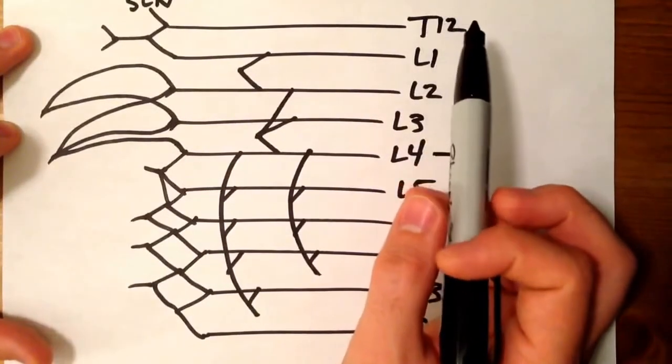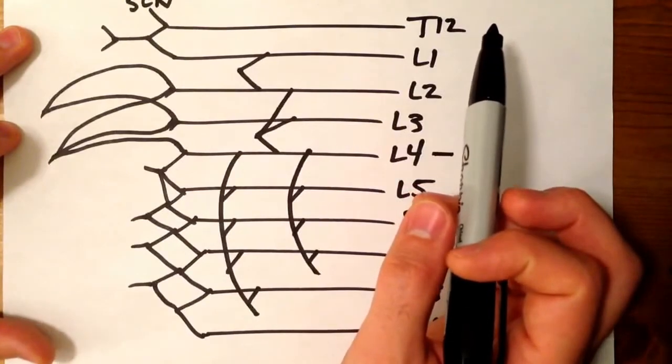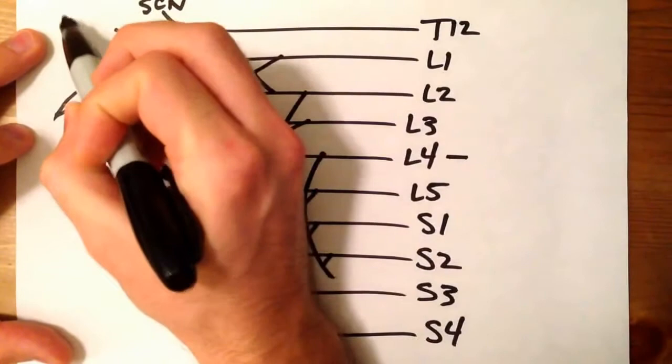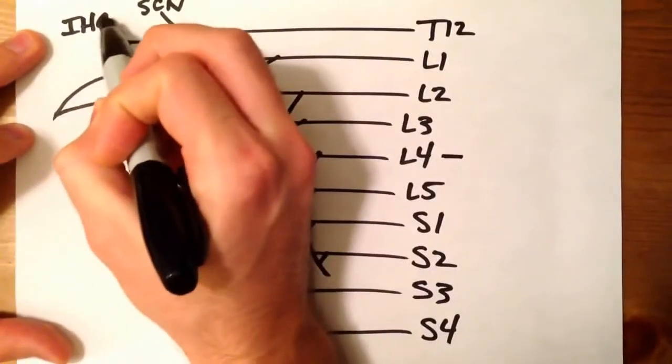These are going to be, according to Gray's 40th, they're really a variable, but according to Gray's 40th, T12 and L1 give you the iliohypogastric nerve.